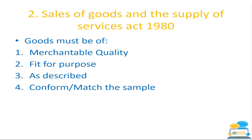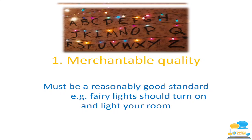Merchantable quality means goods must be of a reasonably good standard. For example, if the fairy lights in Stranger Things didn't turn on properly, they were being infringed under the Sale of Goods and Supply of Services Act 1980. Another example: if an iPad doesn't hold its battery after only a month, or a washing machine keeps stopping when it's only two months old — those aren't of merchantable quality. Or if you buy a pair of shoes and the sole comes off after a day — that's not merchantable quality.